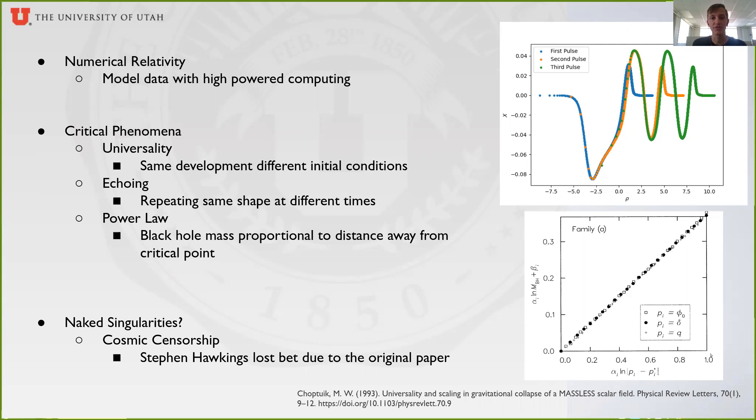We would only alter one of the parameters, for example, just the amplitude. We would find a critical parameter where an amplitude above this critical parameter would collapse into a black hole, and below it, the field would simply disperse.